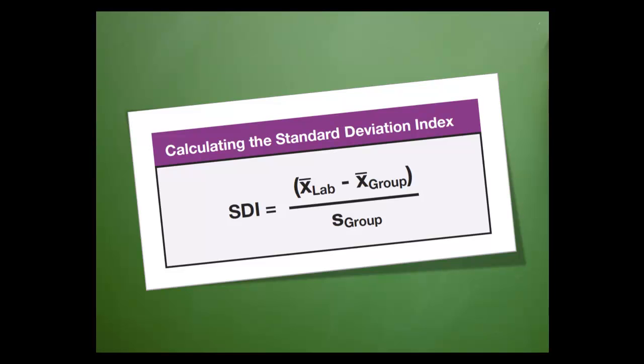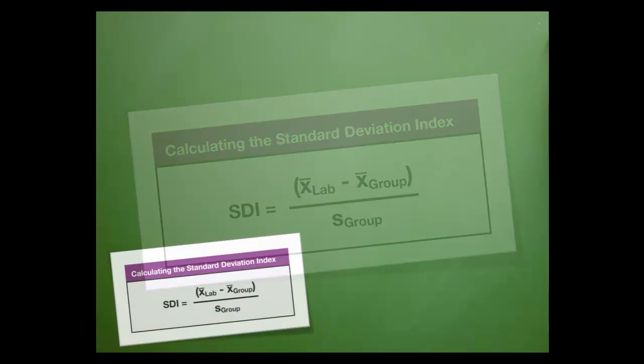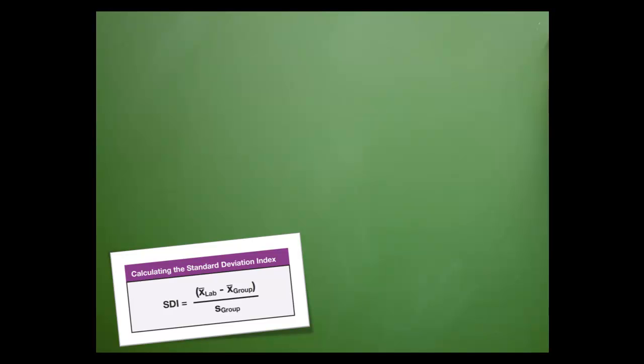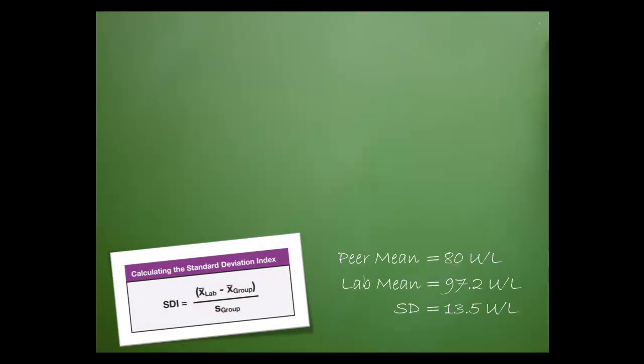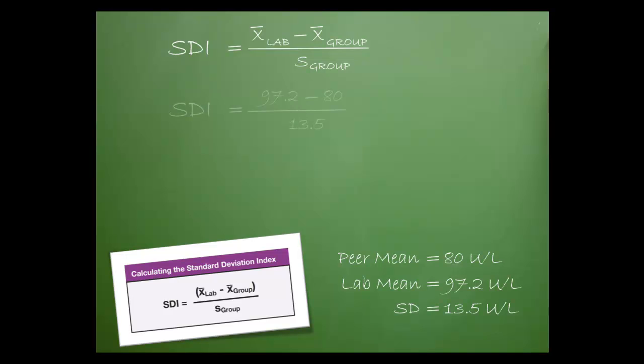Now that you understand how the formula works, let's practice by plugging some numbers into it. Let's move our formula down to the corner, just in case we need it. Here are our values for our means and SD. Let's begin by copying down the formula and then substituting the values.